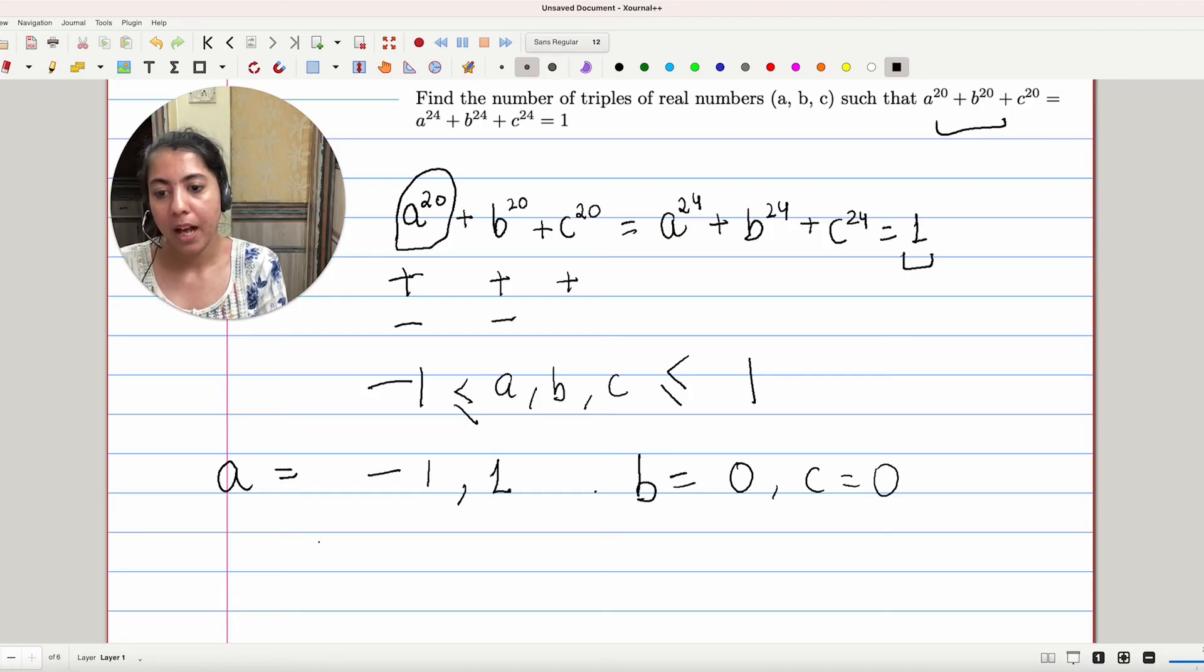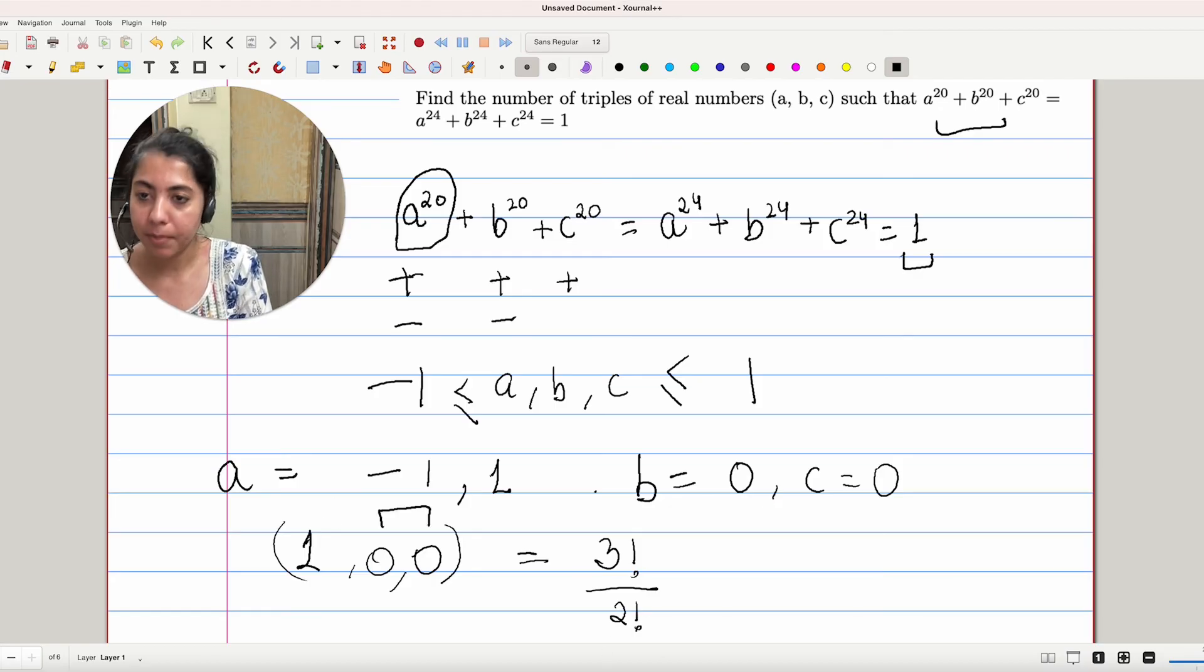So that will be three numbers: 1, 0, 0. And the permutation of them will be 3 factorial divided by 2 factorial. Why divided by 2 factorial? Because 0s are repeated.